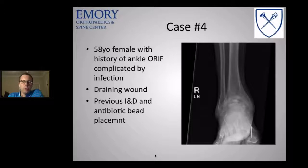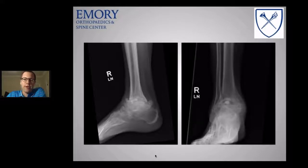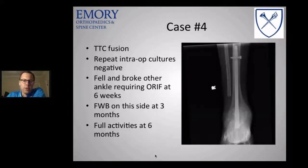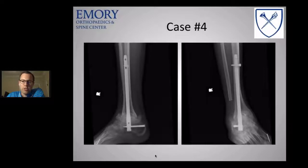Case four: a 58-year-old female referred to me after multiple debridements and wound healing issues — she had a draining wound the first time I met her. We debrided her, placed antibiotic beads, and then addressed her severely collapsed talus and eroded tibia. I offered an external fixator but she adamantly wanted internal fixation. We did a TTC fusion with the Dynanail — intraoperative cultures were negative. She unfortunately fell and broke her other ankle at six weeks and we had to fix both sides. She is now full weight-bearing and doing full activities on both sides at six months.